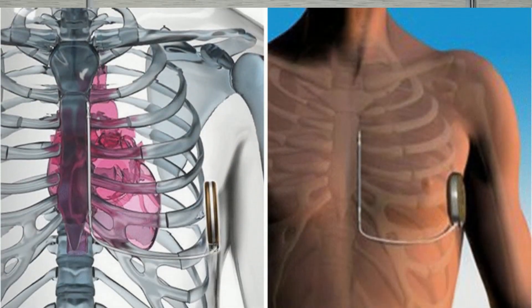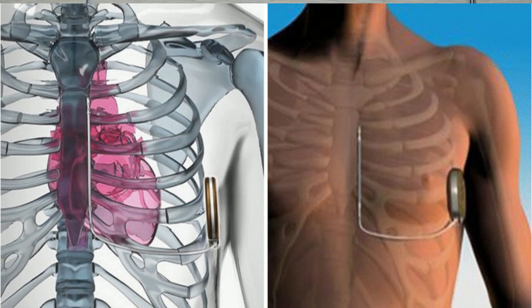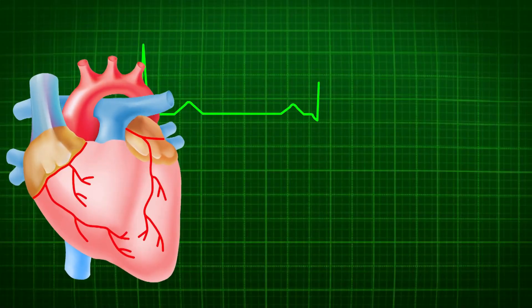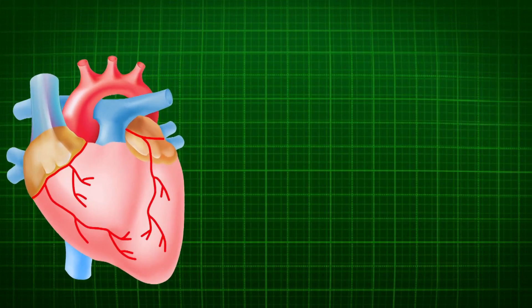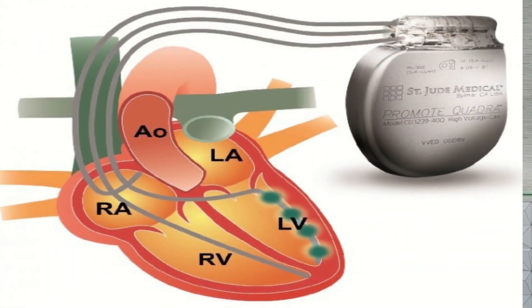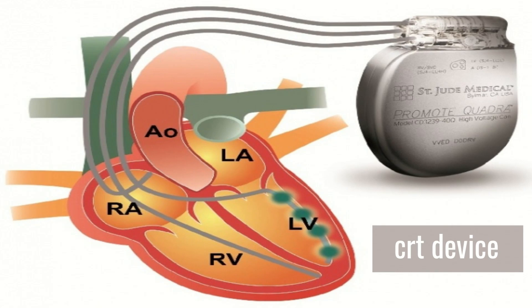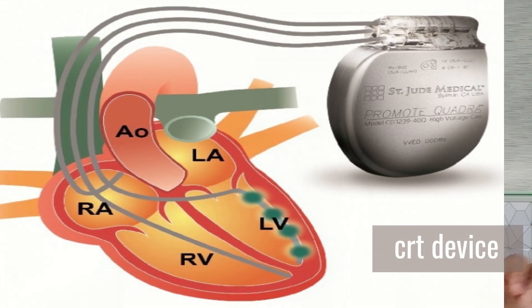This device does not improve the pump function of the patient — it only works when the patient is having a low or high heart rate. It can pace the heart when the rate is low and revert the rhythm when the rate is high. It will only be functional when the patient is having rhythm problems. To improve pump function, there is another device — a triple-chambered pacemaker known as the CRT device — which we will discuss separately. But this AICD device does not improve pump function.